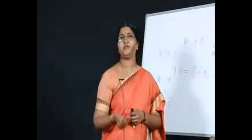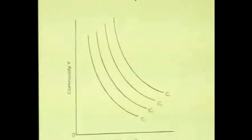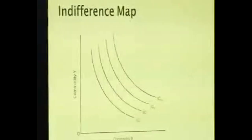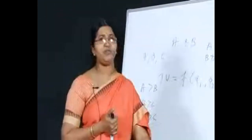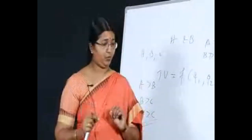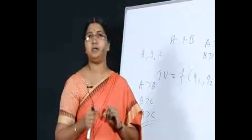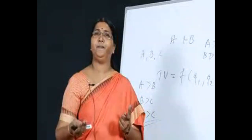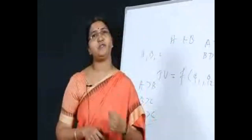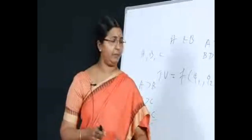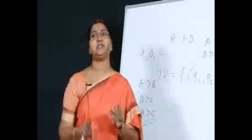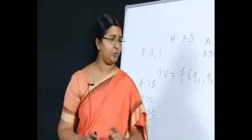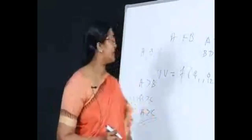Now let us examine the concept of an indifference map, which is a set of indifference curves — IC1, IC2, IC3, and IC4. IC1 is the lowest indifference curve. Along IC1, the level of satisfaction remains the same. However, when the consumer moves from a lower indifference curve to a higher one, say from IC1 to IC2, the level of satisfaction increases. When moving along different points on the same indifference curve, satisfaction remains constant.